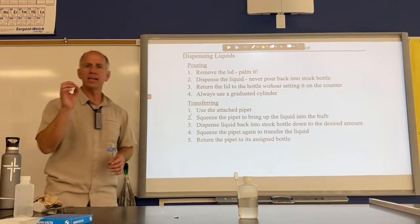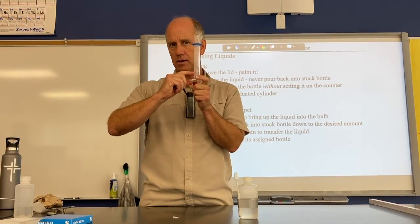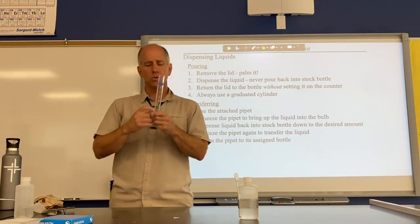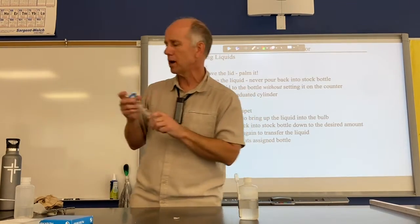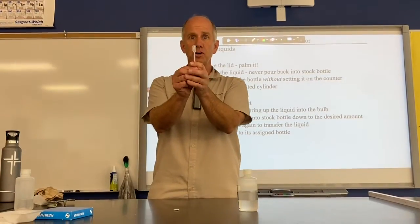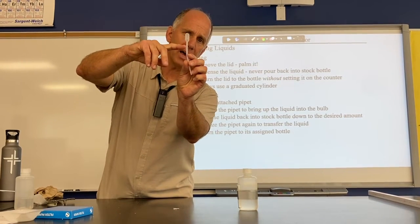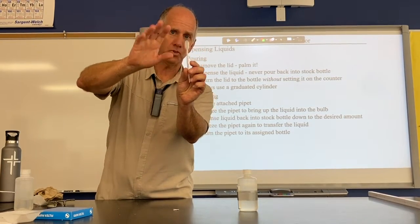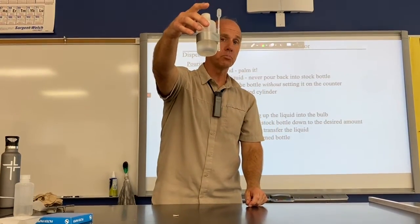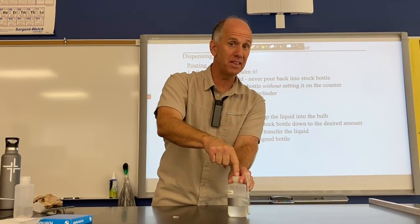When do we transfer? The answer is when we need small volumes. This graduated cylinder only goes down to 10 milliliters, so if we need, say, two milliliters, we can't measure that on here. We use what is called a volumetric pipette — you used this at station 15. The very top line is one milliliter. The pipette is attached to the bottle and has never been anywhere else but in that bottle.